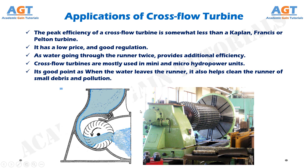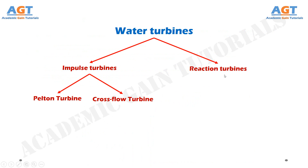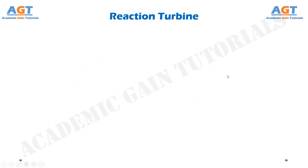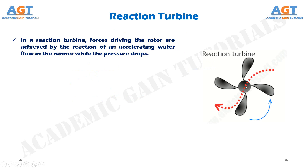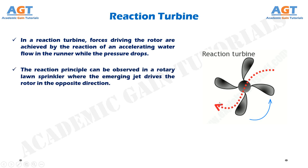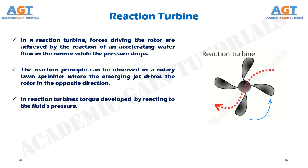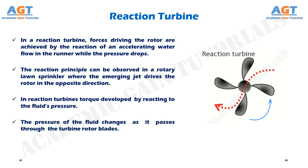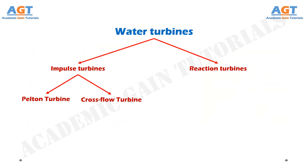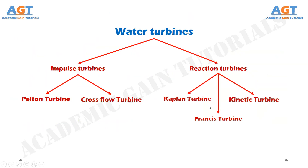We have studied impulse turbines. Now let's look at reaction turbines. In a reaction turbine, forces driving the rotor are achieved by the reaction of an accelerating water flow in the runner while the pressure drops. The reaction principle can be observed in a rotary lawn sprinkler where the emerging jet drives the rotor in the opposite direction. In reaction turbines, torque is developed by reacting to the fluid's pressure, and the pressure of the fluid changes as it passes through the turbine rotor blades. Reaction turbines are of three types: Kaplan turbine, Francis turbine, and kinetic turbine.